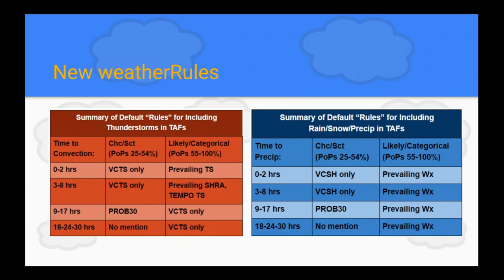We are also getting new weather rules built into the TAF formatter. The weather rules determine how thunderstorms are put into the TAF, or how other precipitation like rain and snow showers are put in. In the short term, if you have likely or categorical for your weather, it's reading your weather string — not your POPs — which will likely result in prevailing thunderstorms. Further out in the TAF period it would be VCTS if you had likely or categorical weather terms.